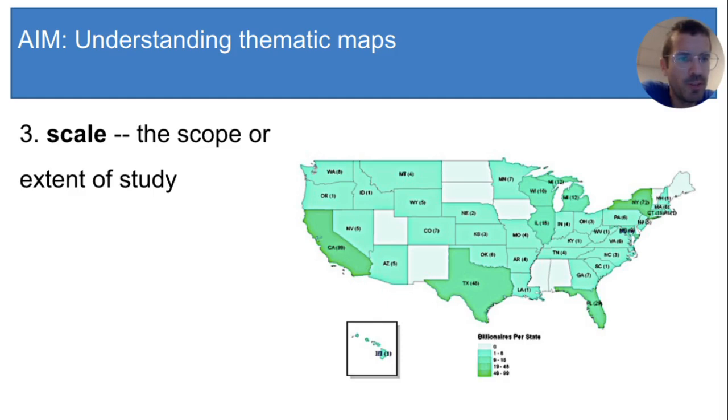In other words, instead of conveying information about the whole world, the scope, the scale of this map is just one country, the United States.